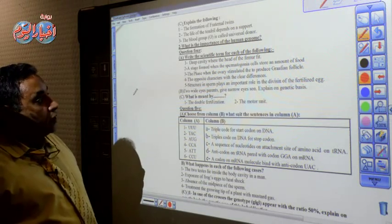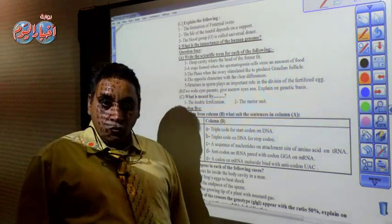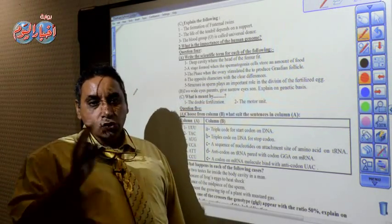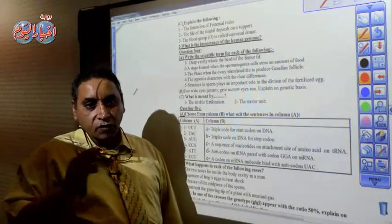Number four: the opposite characters with the clear difference. Of course that's called the allelomorphic character as that of tall and short, red flower and white flower and so on.